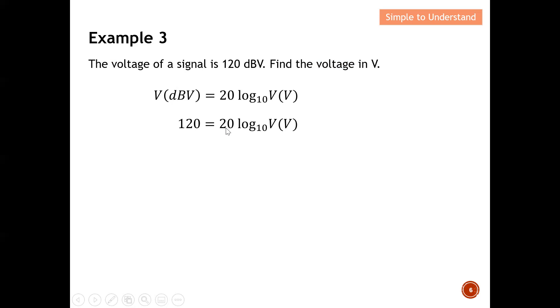So, I divide both sides by 20. So, this 20 disappeared. So, next, I need to do an anti-log over here. So, I do an anti-log on this number. And from here, I compute that my voltage is equal to 1 times 10^6 V. Okay. So, this is the procedure how to convert from dBV to ratio.